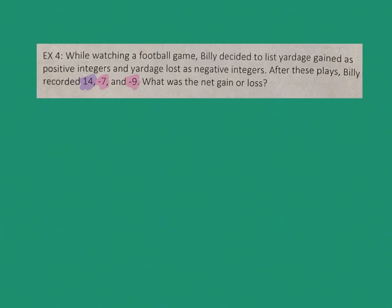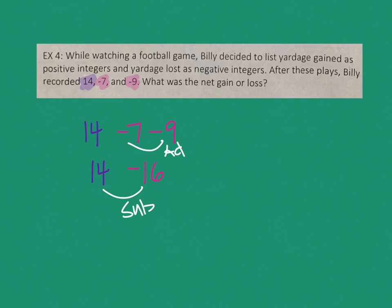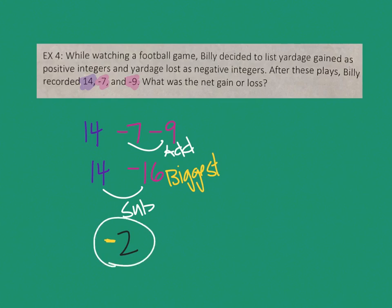You can do this any way you want. I could keep the 14 and then put the two negative numbers together: negative 7 and negative 9. These two are the same, so they go together to make negative 16. Then I still have 14. These two numbers are now different, so I should subtract them. 14 minus 16 is 2, and 16 was the biggest and it's negative, so my answer would be negative. Altogether, there was a loss of two yards.